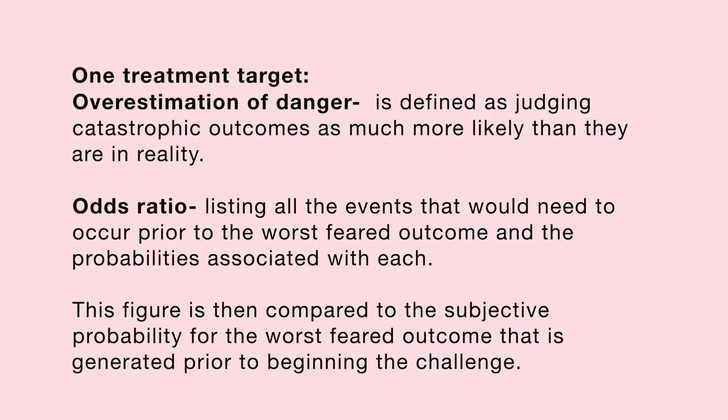Here are some of the targets that individuals may work on when going through CBT. One target is overestimation of danger, defined as judging catastrophic outcomes as much more likely than they actually are in reality. This is challenged by techniques including an odds ratio, which involves enlisting all the events that would need to occur prior to the worst feared outcome and the probabilities associated with each, then comparing this to the initially estimated probability of that outcome.